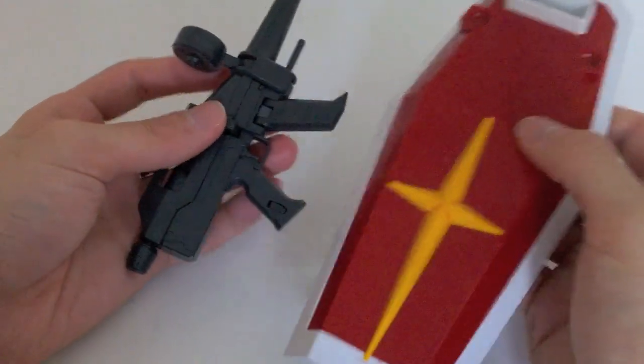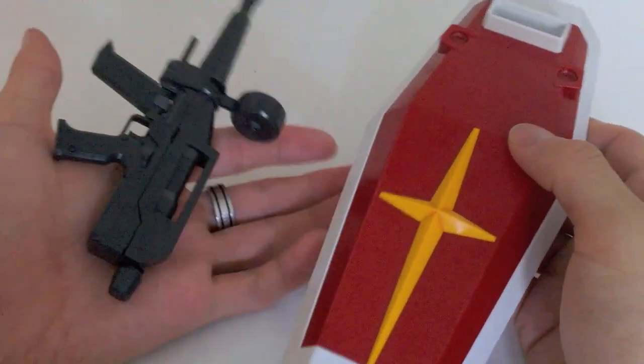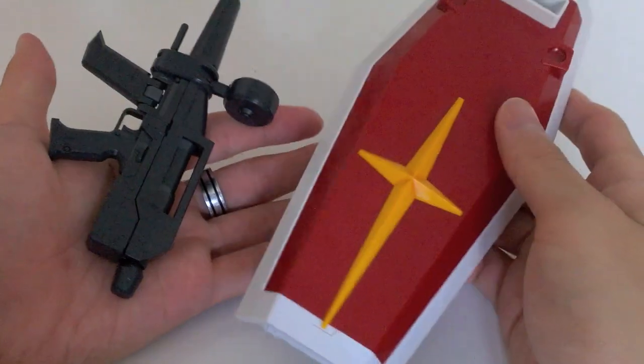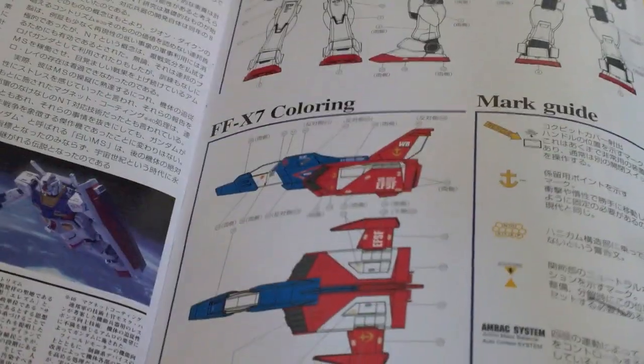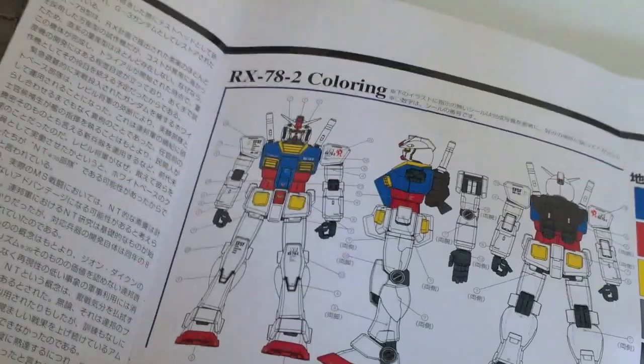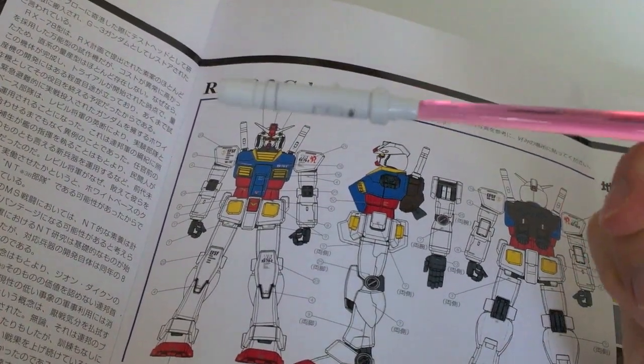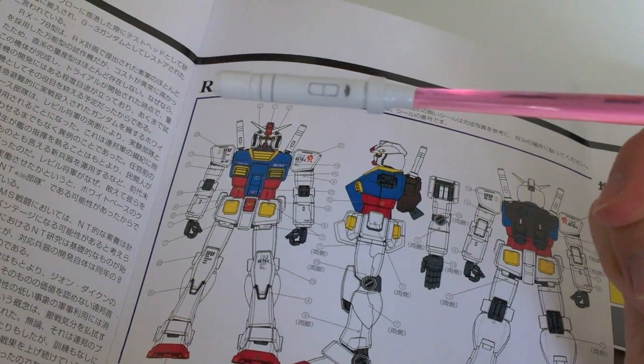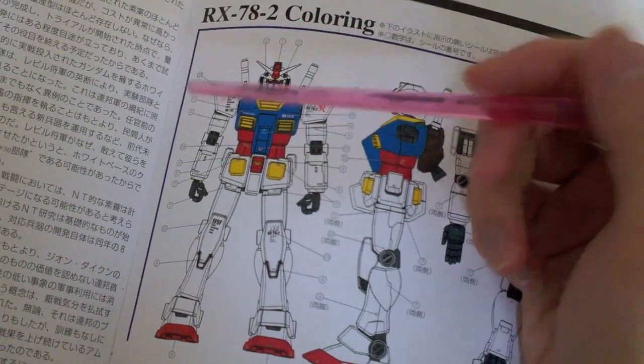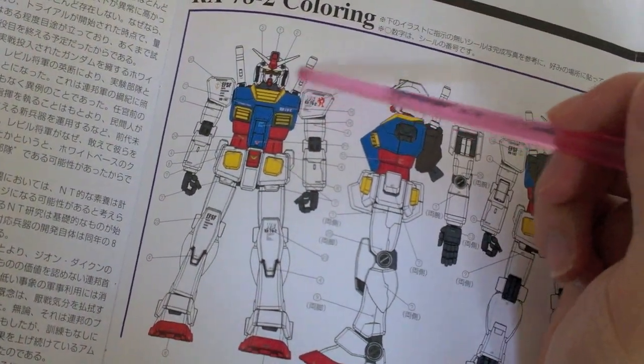You'll notice that the rifle and the shield are completely devoid of decals, and it's because in the instruction manual, in the back with the detail diagram, the weapons are completely left out. The only reason that the beam sabers have that little one right there near the switch is because you can see there's a little detail there, and I just found two extras on the sheet and stuck them on.